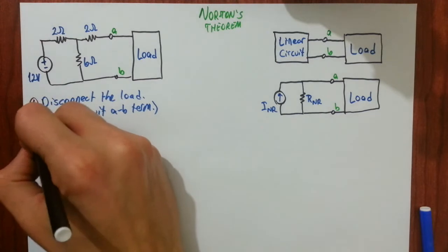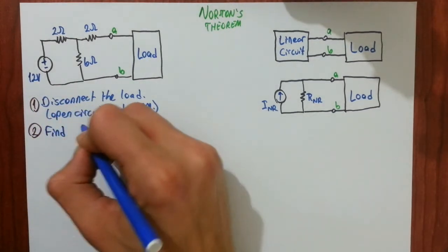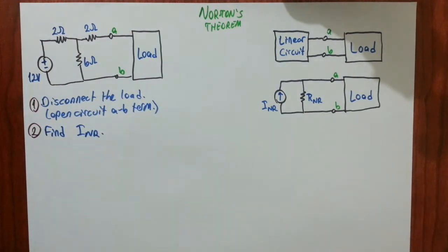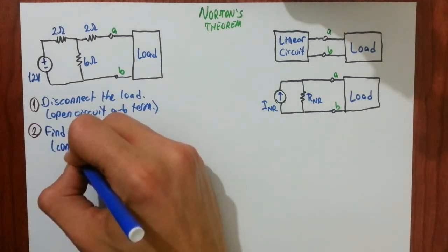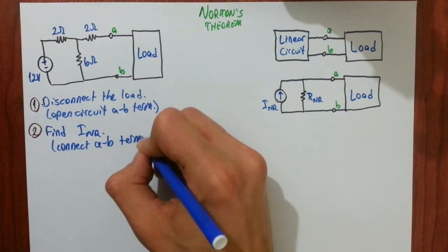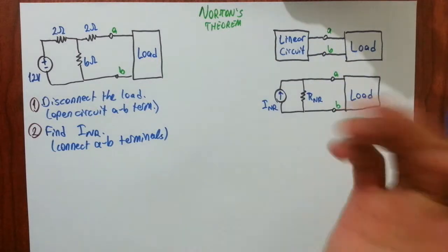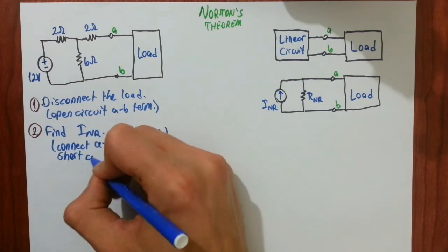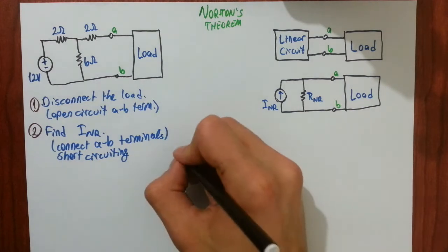And second step is to find Norton current. How you will find it? Connect A and B terminals. You will connect A and B terminals with a wire. What does it mean? It means short circuiting A and B terminals. Let me show how you will do it.